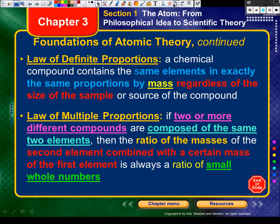The law of definite proportions — someone give me an example of any chemical compound. Sodium chloride, water, carbon dioxide, sucrose. A chemical compound contains the same elements in exactly the same proportions by mass, regardless of the size of the sample. So whether you have a little water or a lot of water, every single water molecule looks the exact same and weighs the exact same, proportioned by mass.